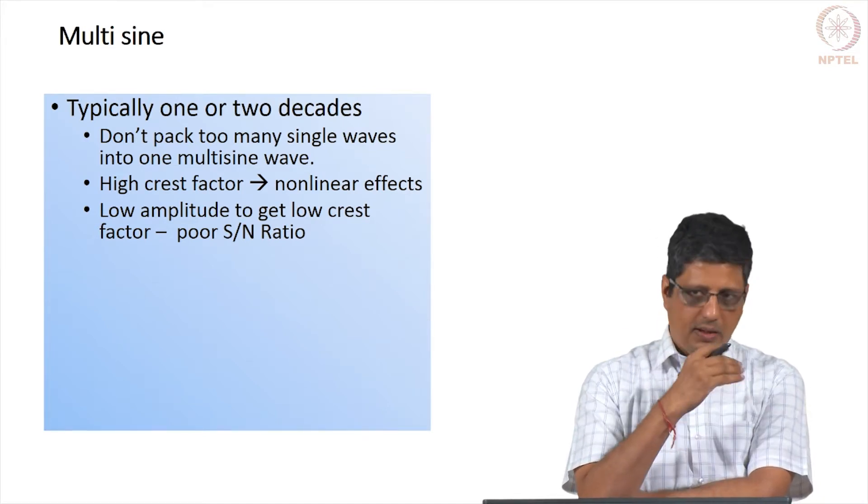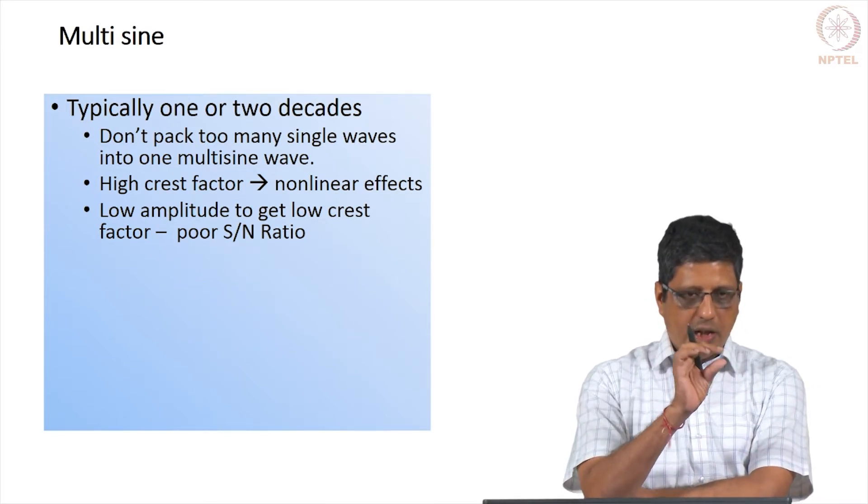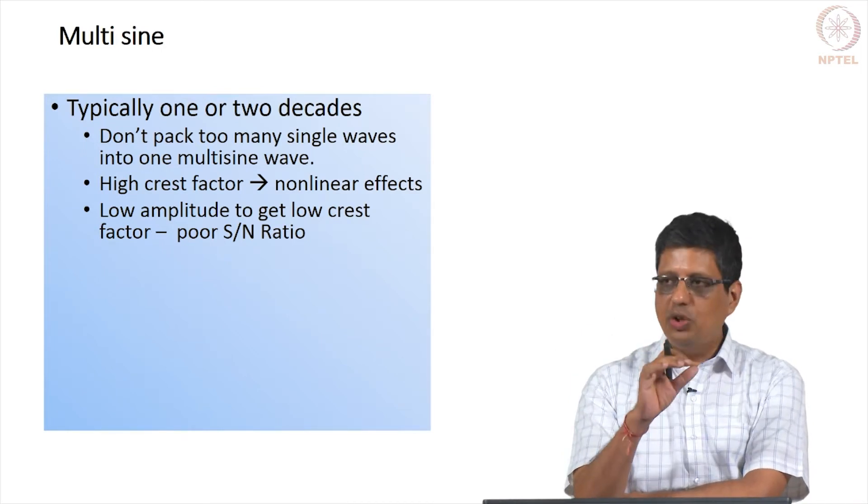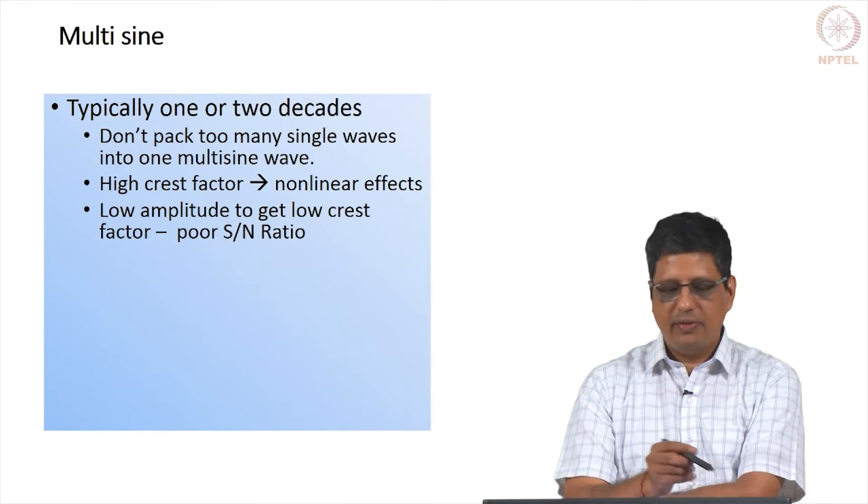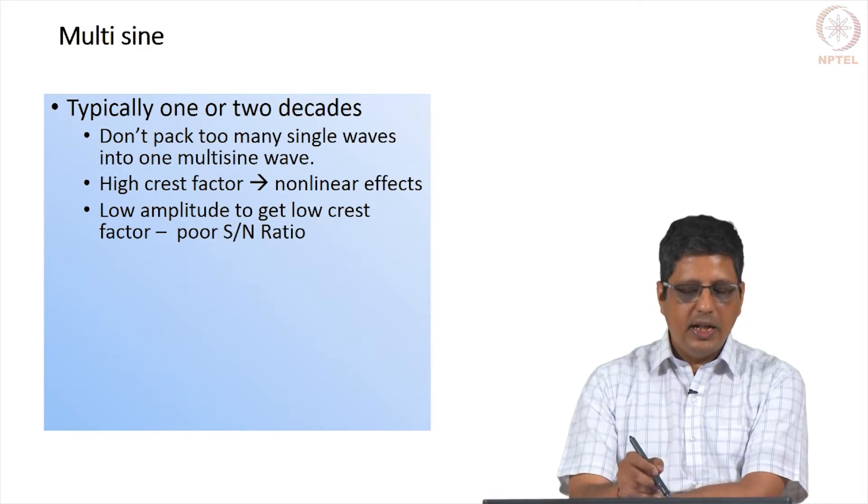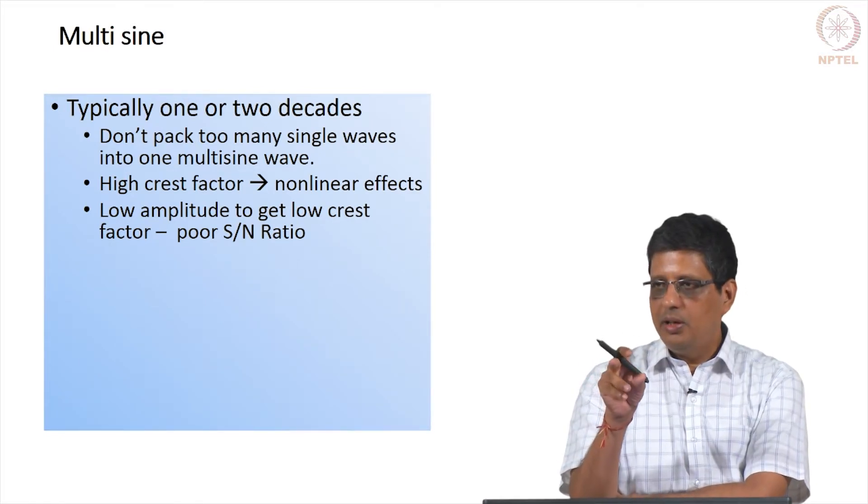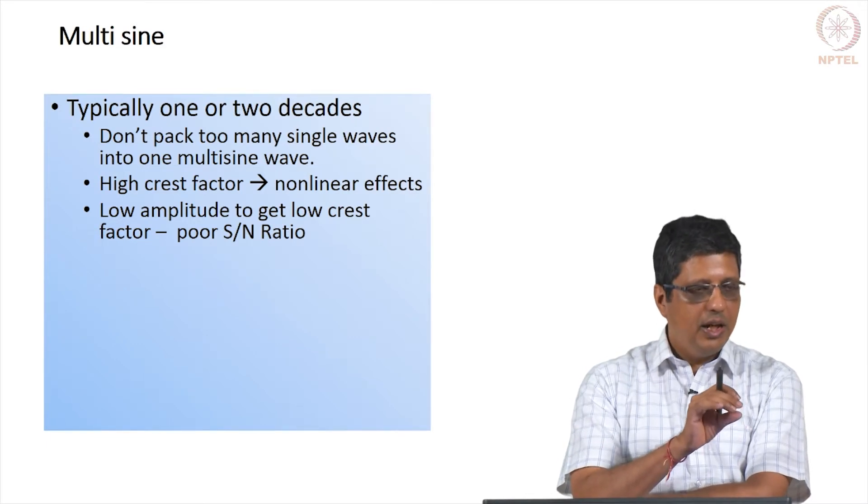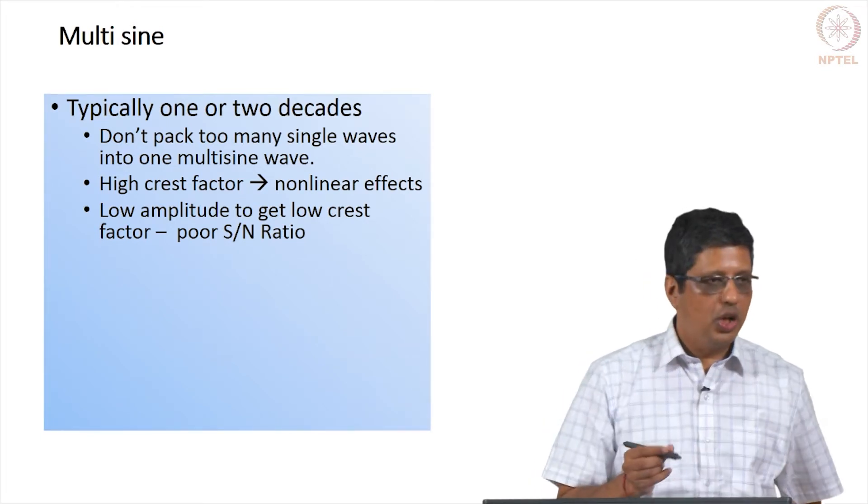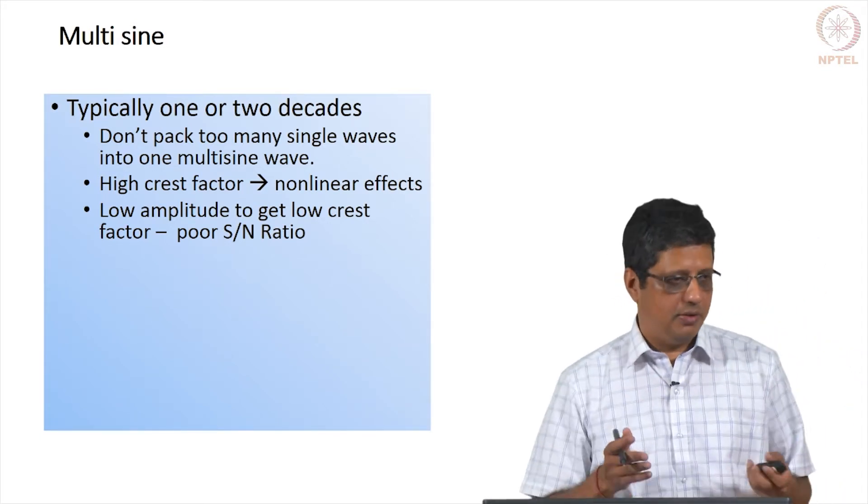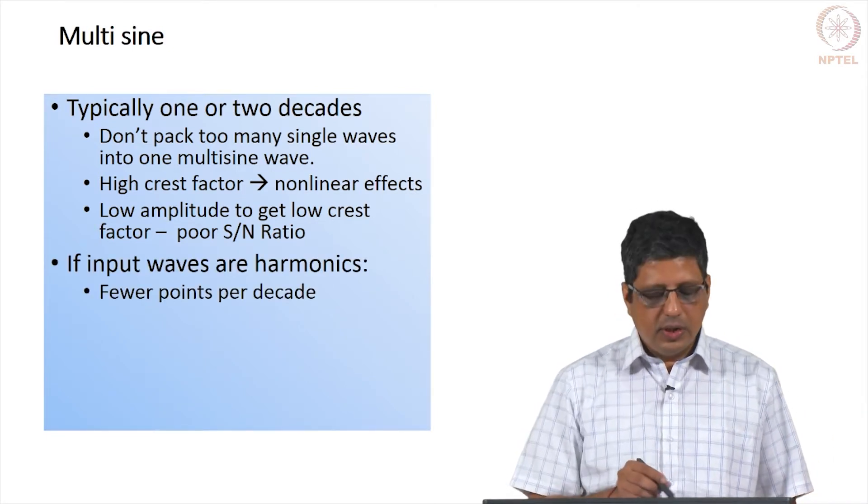It is possible to combine from 1 millihertz to 1 kilohertz. But if you combine many, many waves and each wave has certain amplitude, if you add them together, the peak value will be very high. Do not pack too many single-sine waves into one multisine wave. You will get nonlinear effects. And if you put small amplitude-sine waves, peak value will not be high. But results that we get will have poor signal-to-noise ratio, it means it will be very noisy. So you cannot really say that instead of combining two waves, I will combine 20 waves. Anyway, I am going to pay a little bit of penalty, I will reduce the time. Again you will have problem.